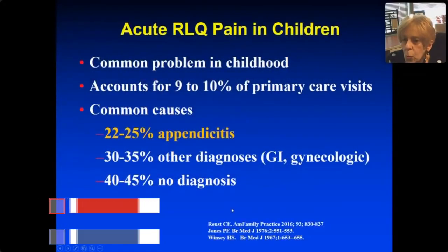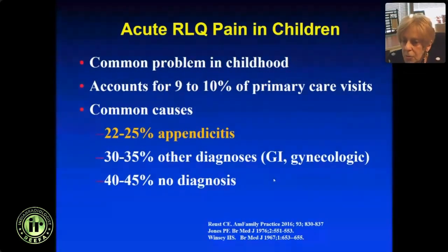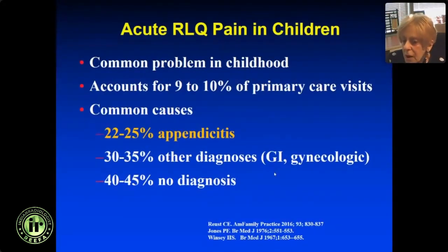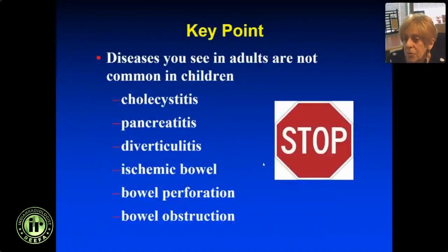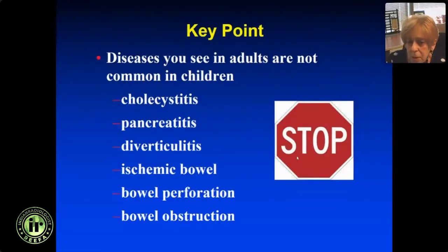Acute right lower quadrant pain is really one of the common problems. If you look at the causes, we always think about appendicitis, but if you were to line up 100 patients, up to 25% would have appendicitis, 30-35% other diagnoses related to the bowel or gynecologic diseases, and in 40-45% you're not going to make a diagnosis, probably because it's some type of viral illness. A key point in children: we're not going to see cholecystitis, pancreatitis, diverticulitis, ischemic bowel disease, or perforation from other causes. So there are fewer diagnoses, but they've still got to be done correctly.